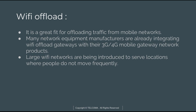Wi-Fi is a great fit for offloading traffic from mobile networks. 3GPP and the Wireless Broadband Alliance have Wi-Fi offloading solutions that are becoming real. Many network equipment manufacturers are already integrating gateways with 3G and 4G mobile gateways and network products. Rather than requiring new hardware, Wi-Fi offloading is totally based on 3GPP and has been enabled in mobile handsets through software upgrades.